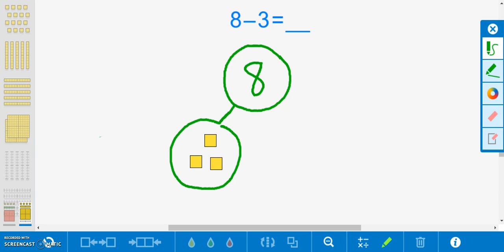This number bond allows us to visualize the missing part of our whole, as it is represented with a question mark. As you can see, we are solving to determine the missing part of our whole. This missing part is the amount of M&Ms that Ava has.